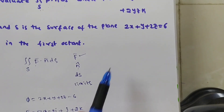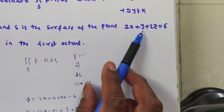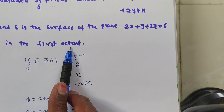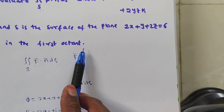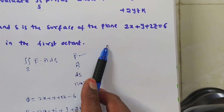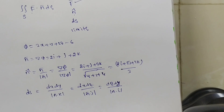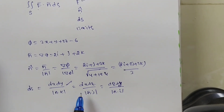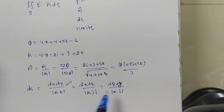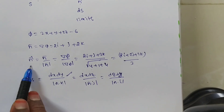See the surface they gave: 2x + y + 2z = 6 in the first octant. They have not given explicit limits for x, y, or z separately, so you can choose any projection plane. I am choosing the xy plane, so dS = dx dy / |n̄·k|.